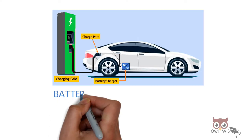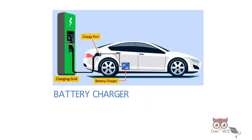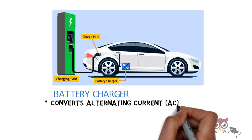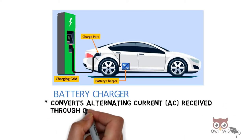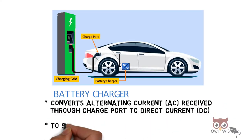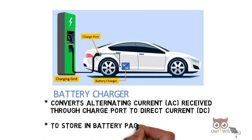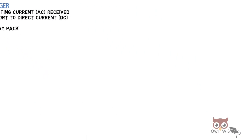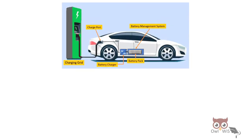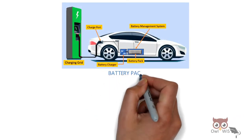Next is the battery charger, which is present right next to the charge port. It is the one that converts alternating current received through the charge port into direct current to store in the battery pack.